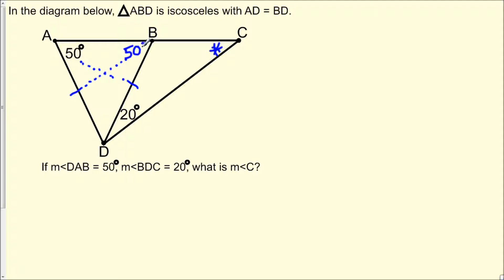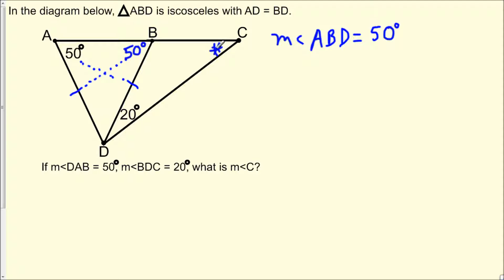So we can label this 50 degrees. And to be formal, the measure of angle ABD equals 50 degrees. Now this information doesn't give us the exact measure of angle C, but we can start targeting the other missing angles in the problem. Notice we have two other unknown angles: angle ADB and angle DBC. The angle we're interested in next is angle DBC.